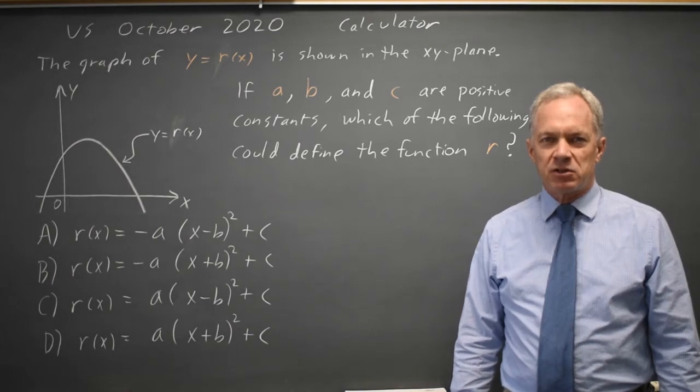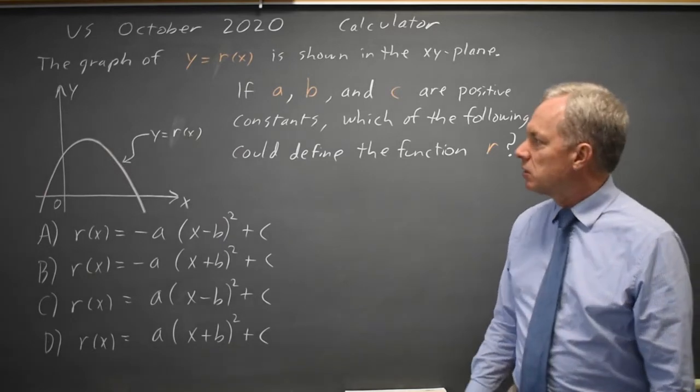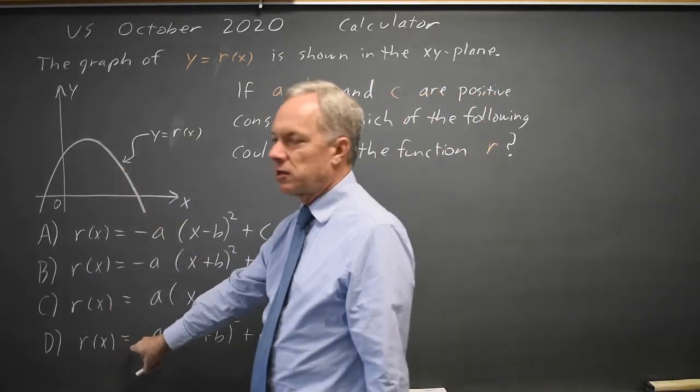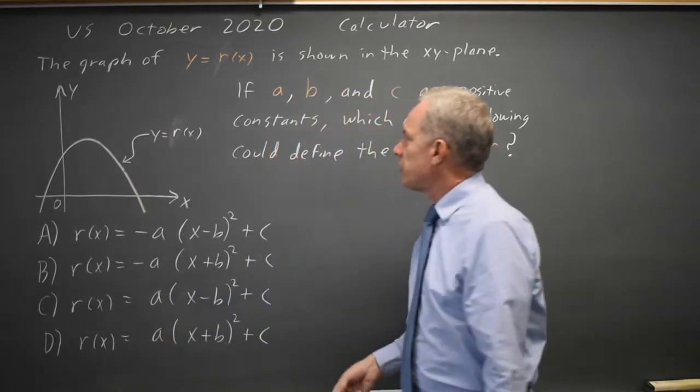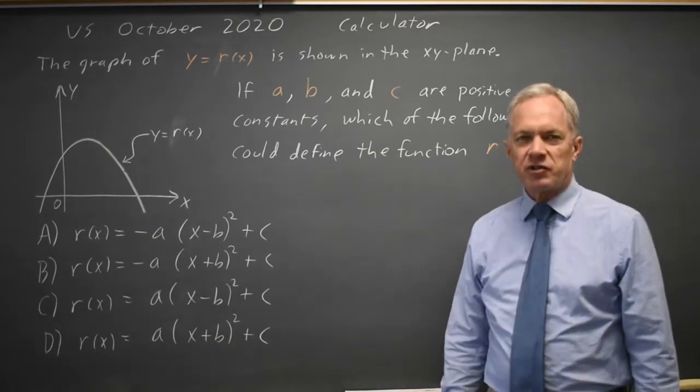I'm Dr. Roger and this question is from the October 2020 U.S. exam calculator section. College Board gives us the graph of what their answer choices tell you is a quadratic. It says if a, b, and c are positive constants, which of the following could define the function r of x?